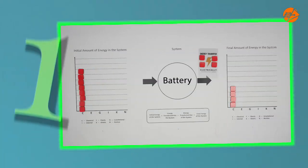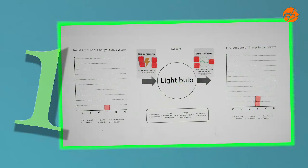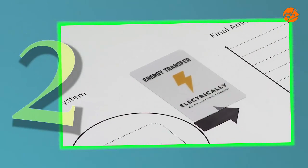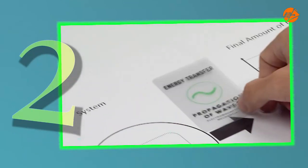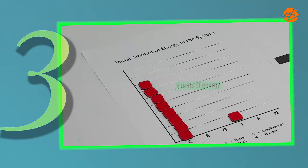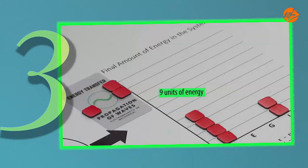To round up the learning from this video, let's go through some key points. The choice of the object of interest affects the analysis of the event in terms of the energy transfers and energy stores involved. Energy can be transferred electrically through an electric current and through propagation of waves. Energy is not created or destroyed in any process. The sum of the amount of energy in an object of interest at the initial state and the amount of energy transferred in is equal to the sum of the amount transferred out and the amount of energy at the final state. Now it's time for you to explore more examples on your own.